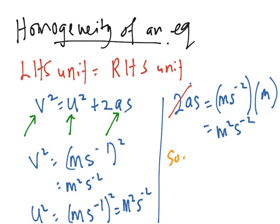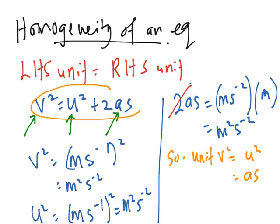The unit of v² is equal to the unit of u² and it is equal to the unit of as. Hence we can say that this equation is homogeneous.